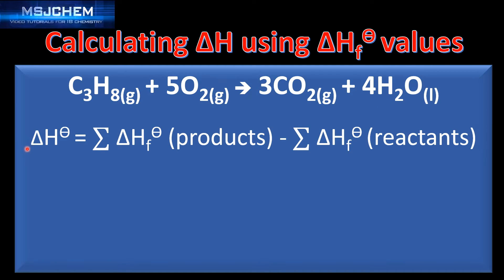The equation we're going to use is: the standard enthalpy change of reaction equals the sum of the standard enthalpy change of formation of the products minus the sum of the standard enthalpy change of formation of the reactants.